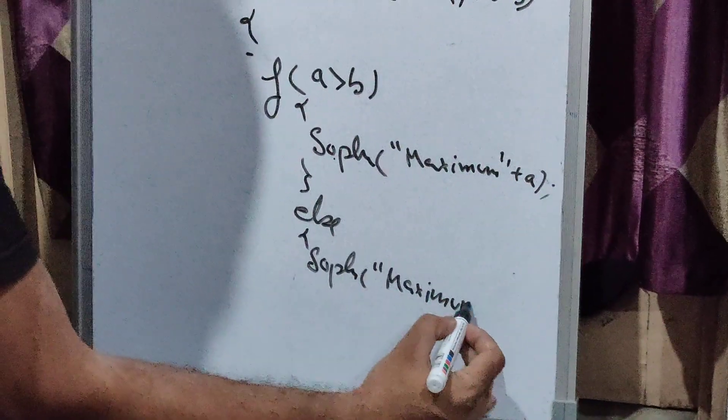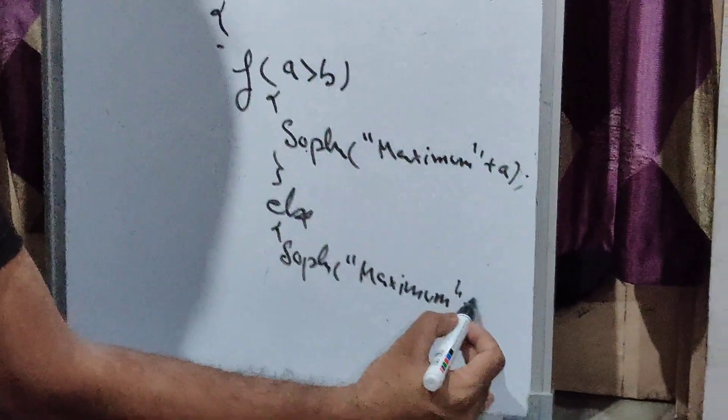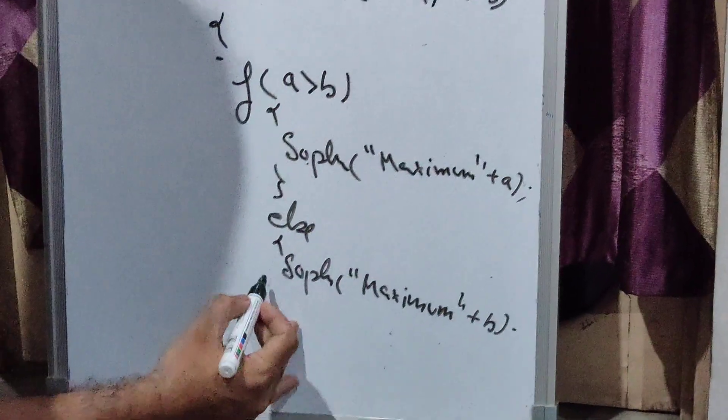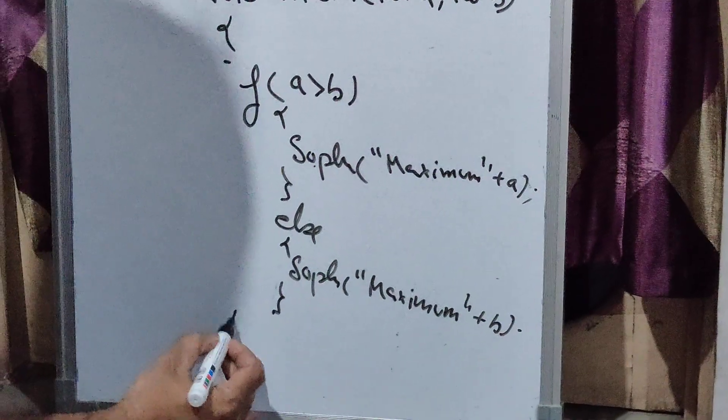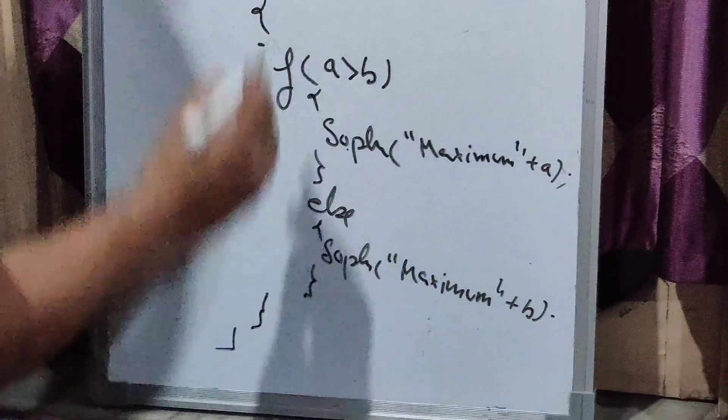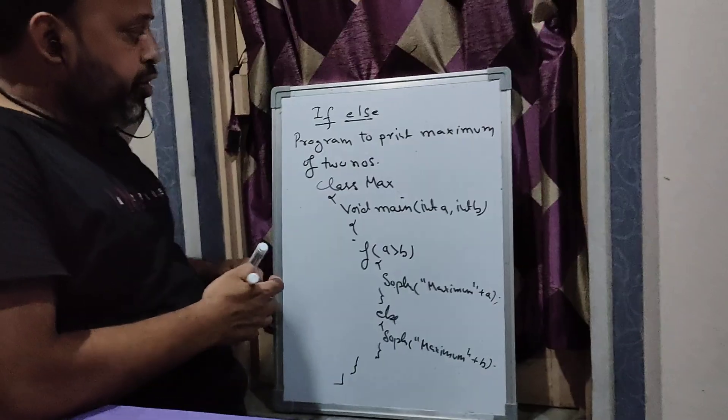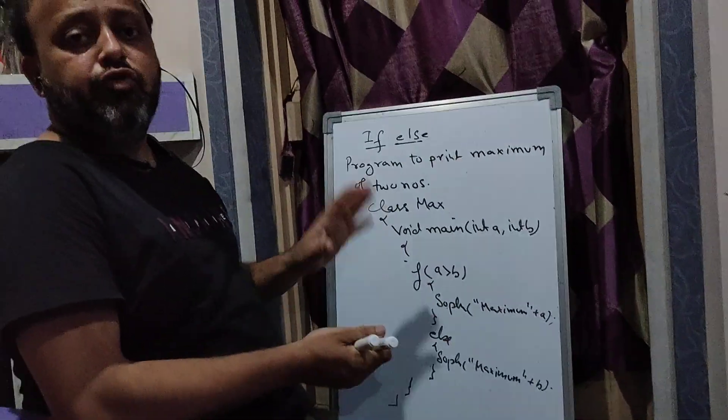In the else part, use sopln to print maximum b. Normally we are doing the decision making chapter. We will do simple programs which take a decision. Here the decision we are taking is whether a is greater than b or not. If a is greater than b, then a is printed as maximum; otherwise b is printed.